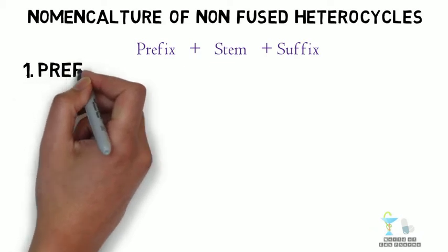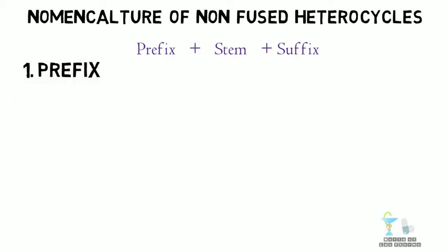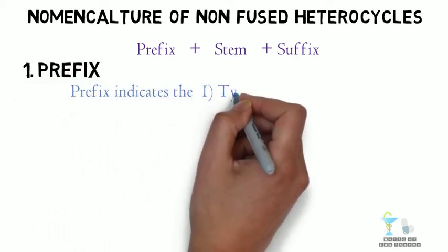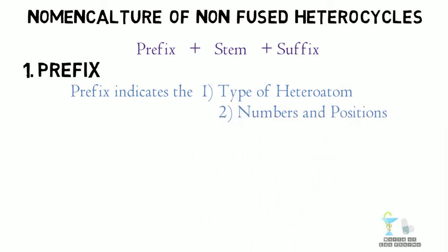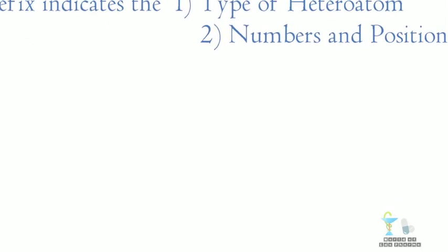Number 1: Prefix. The prefix indicates the type of heteroatom, their numbers, and positions. The most common heteroatoms are oxygen, nitrogen, sulfur, and phosphorus.